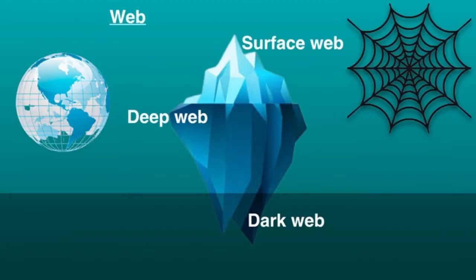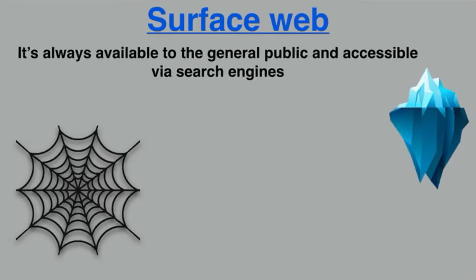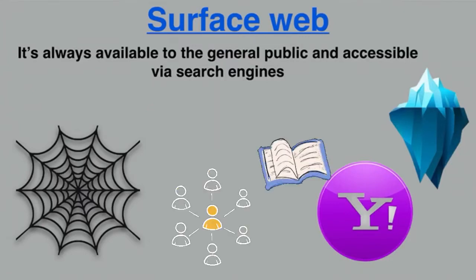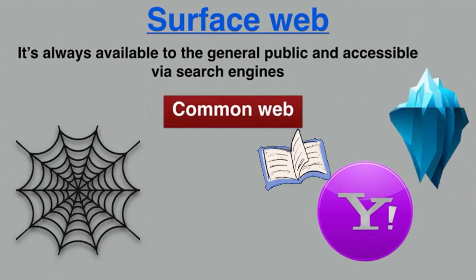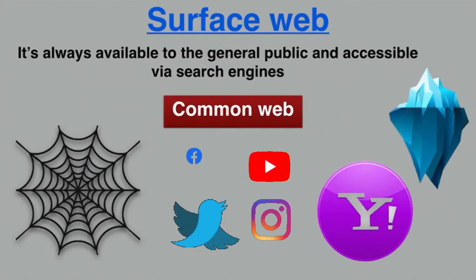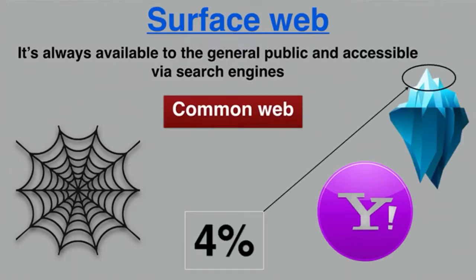Let's begin with the first layer: surface web. This is the internet we all know and love. It's always available to the general public and accessible via search engines like Google and Yahoo. Some people call it the common web. Everything you see on the surface of the internet — for example, using Facebook, YouTube, Twitter, Instagram, etc. — makes part of the surface web, which comprises just 4% of the entire internet.